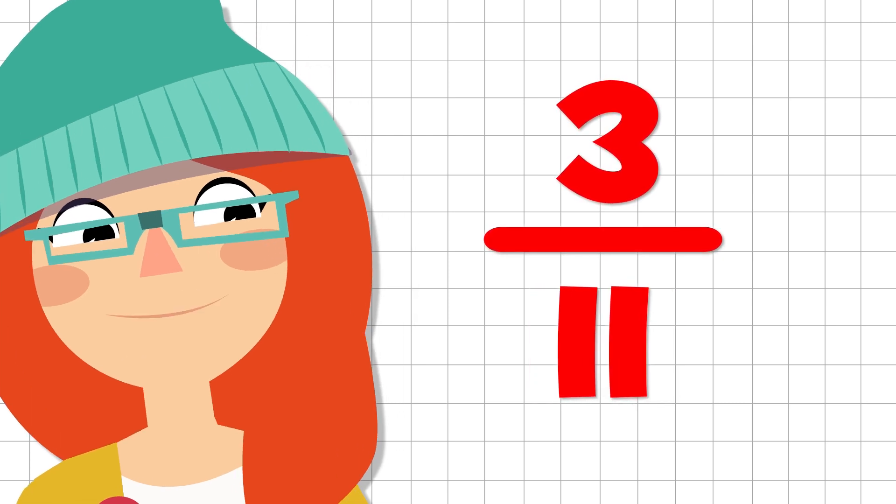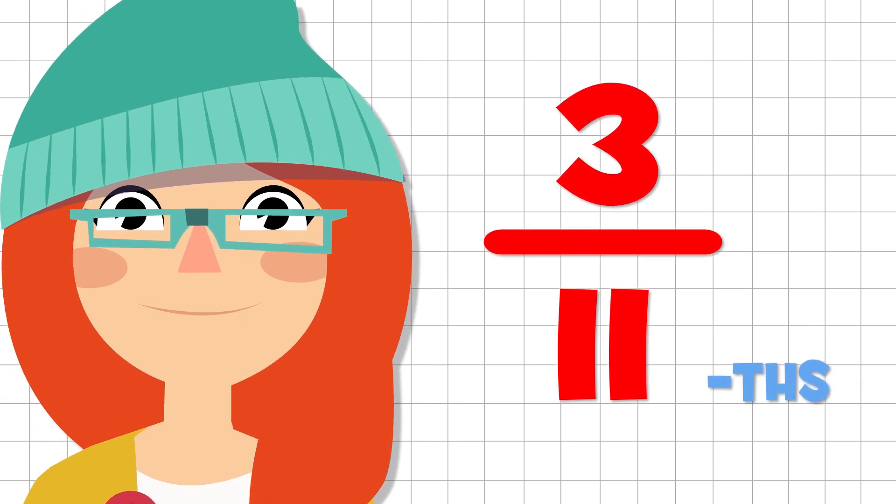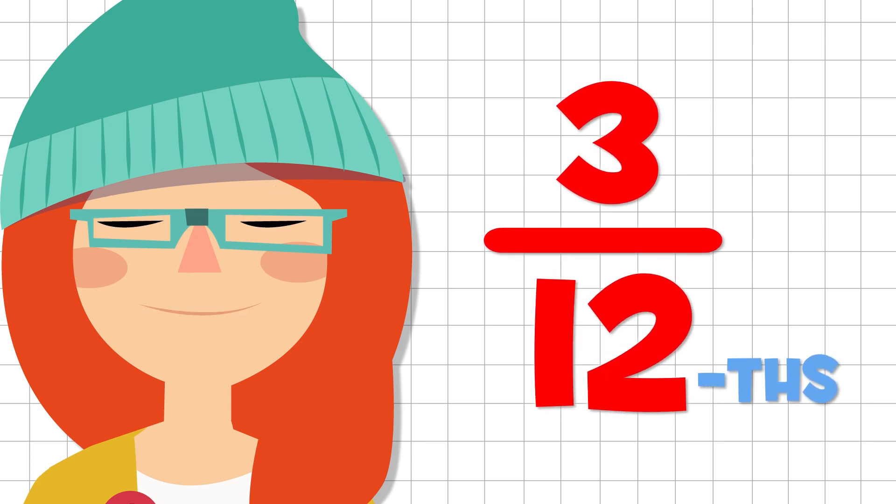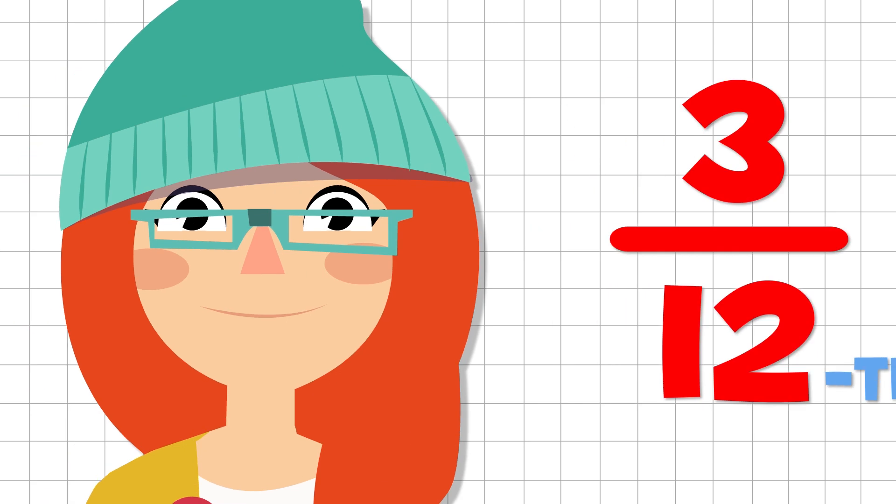From eleven onwards, it's the same as before. Just keep adding the suffix T-H-S. So if the denominator is an eleven, we would say elevenths. If it's a twelve, we would say twelfths. And so on. And so forth.